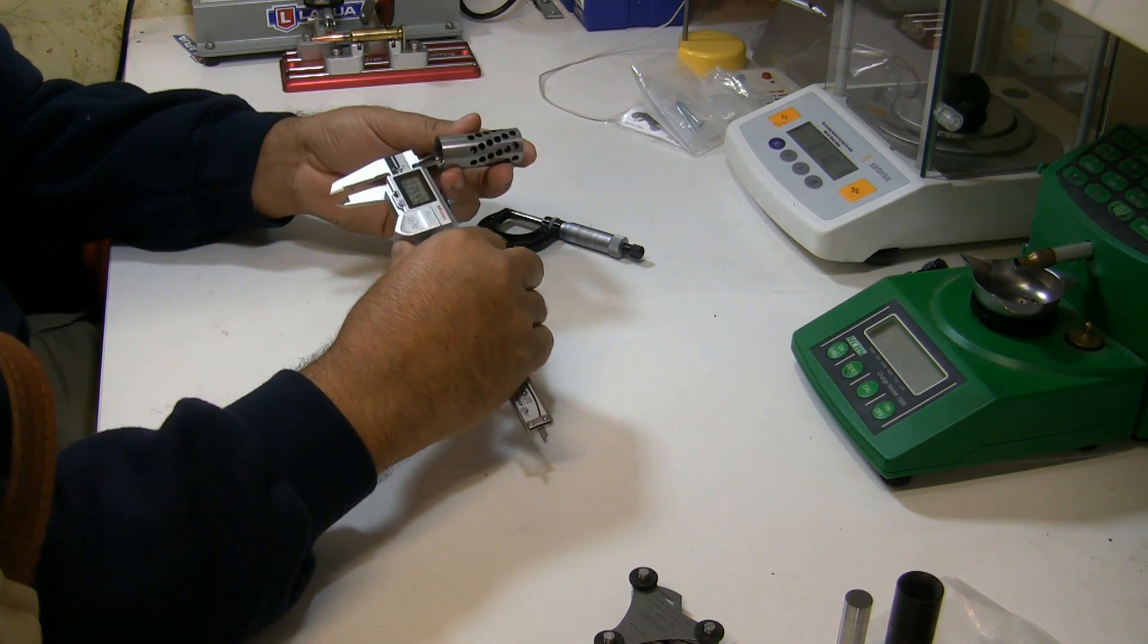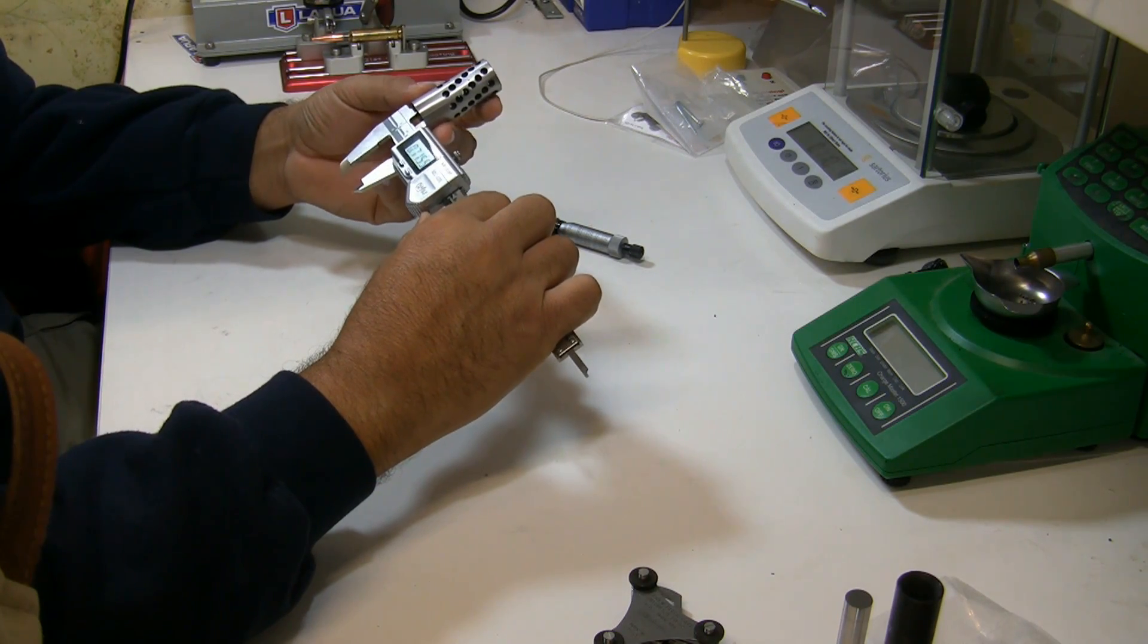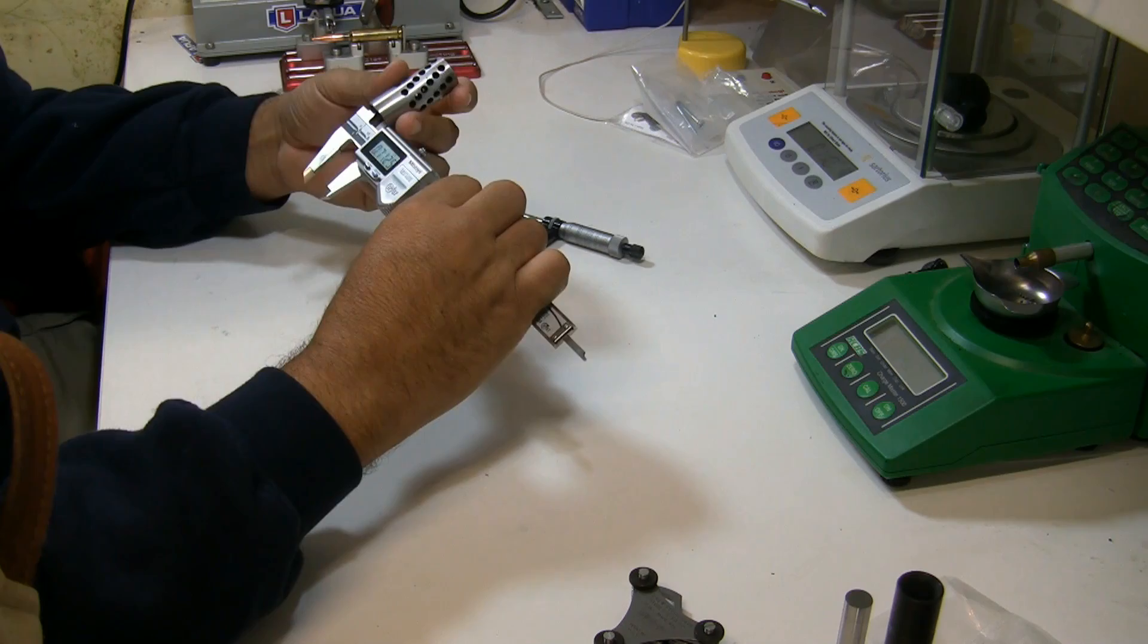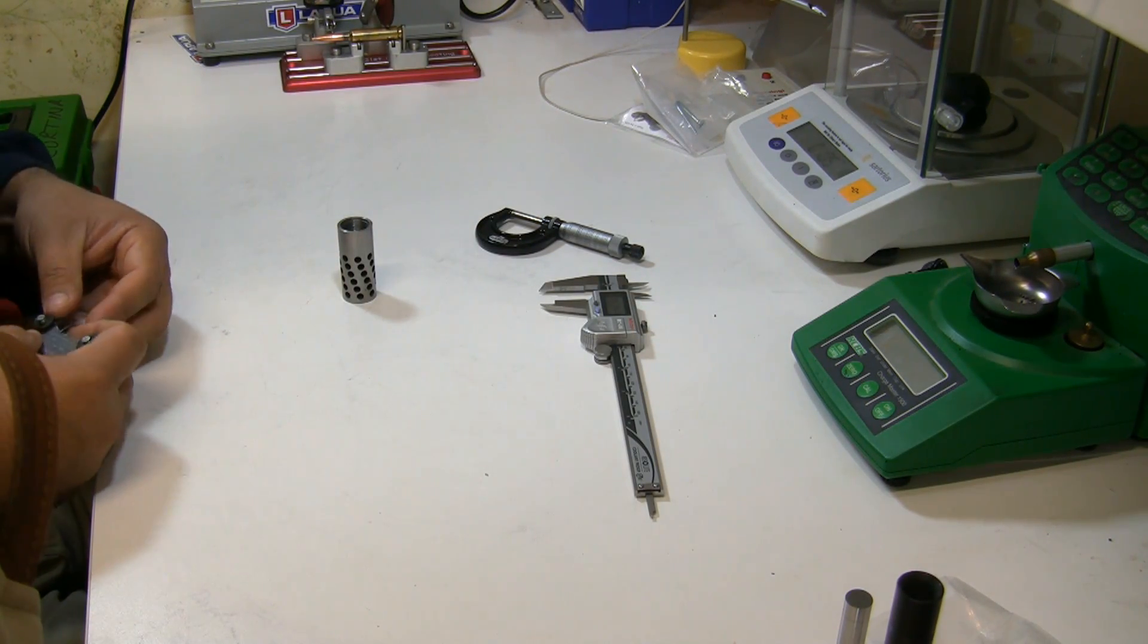First thing is we're going to measure the minor diameter, the ID. So it's 7/16, so next thing we need to figure out is the thread pitch.